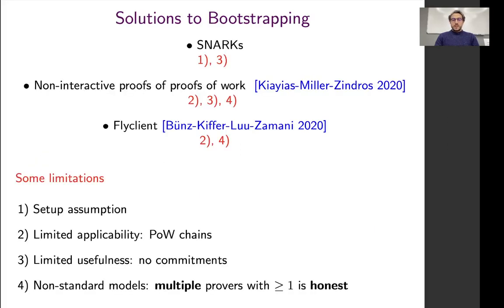Solutions to this problem exist: you have SNARKs as generic solutions, non-interactive proofs of proofs of work, and FlyClient. However, some limitations exist — either they have setup assumptions, limited applicability (applied for proof-of-work blockchains but not proof-of-space blockchains), or limited usefulness; some do not even have the notion of a commitment. More interestingly, FlyClient and NiPoPoW work in a model with multiple provers assuming one of them is honest — this is the only case where the verifier has any guarantees. If the verifier is talking to a malicious prover, there are no guarantees whatsoever.